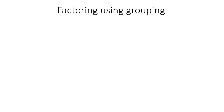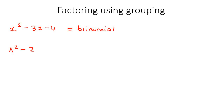In this lesson, we are going to look at how to factorize using a technique called grouping. So we've looked at in the past things like x squared take away 3x take away 4, and we've called that a trinomial. And we've looked at how to factorize that. We've also looked at things like the difference of squares, and we've learned how to factorize that.